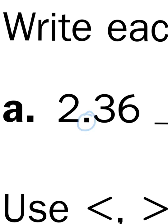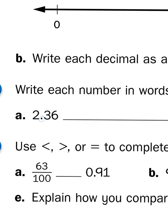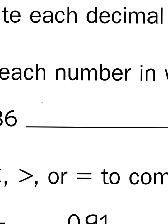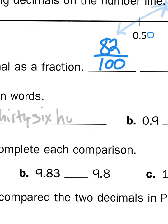That decimal point we replace with the word and. And when we say 36, we've got to remind ourselves that it's not 36 ones, it's 36 parts of 1, 36 hundredths. So writing the words: 2 and 36 hundredths. It's like hundred with a TH at the end. Hundredths.